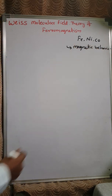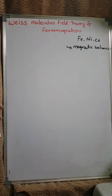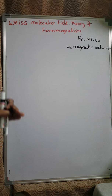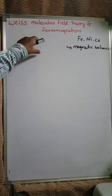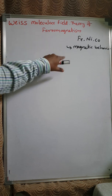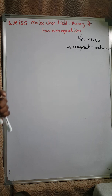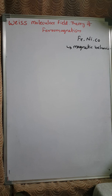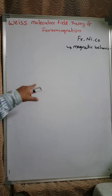In the absence of an external magnetic field, we propose a molecular field theory and postulate that there is an internal magnetic field — an internal molecular field — which causes the spontaneous magnetization behavior. This internal field is responsible for the spontaneous magnetization of a ferromagnetic substance, so that the material possesses magnetization even in the absence of an external applied field.